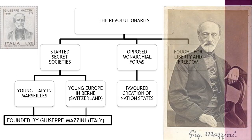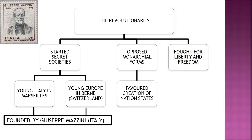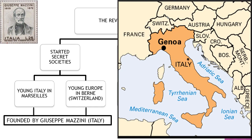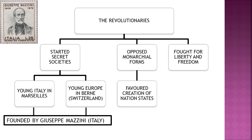One very famous revolutionary was Giuseppe Mazzini. He belonged to Italy and was born in Genova in 1807. When he was very young, he joined a secret society called the Carbonari. But at the age of 24, in 1831, he was sent into exile out of Italy because he had attempted an unsuccessful revolution in Liguria. Even in exile, he did not stop. He founded two secret societies: Young Italy, founded in Marseille in France, and Young Europe, founded in Bern in Switzerland. His main aim was to unify Italy, which had been captured by many nations. He was so influential that Metternich once described him as the most dangerous enemy of our social order. The conservative regimes were scared of him.